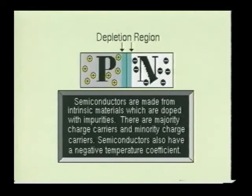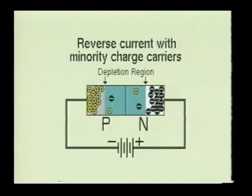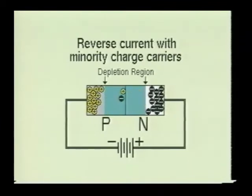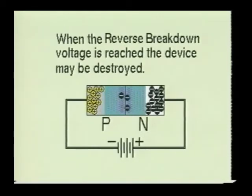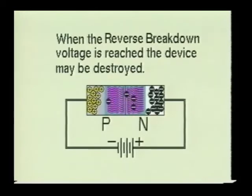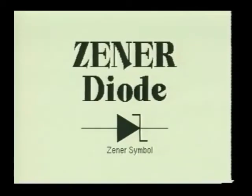Now that you have an understanding of how the P-N junction works, we will examine some of the more common special purpose diodes which you will encounter as a technician. When an ordinary general-purpose diode is reverse biased, it will have a very small reverse current flow made up of minority charge carriers. If this reverse bias voltage is increased sufficiently, the P-N junction will break down and a large reverse current will flow, which usually destroys the device. However, there is a special purpose diode that is designed to operate in the reverse bias mode. This diode is referred to as a Zener diode.